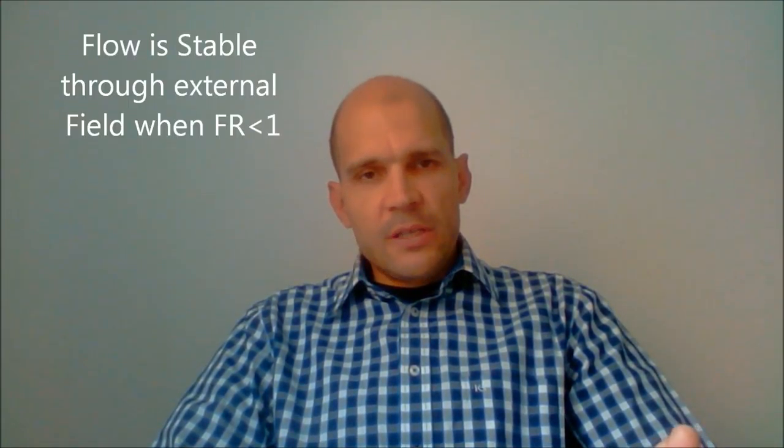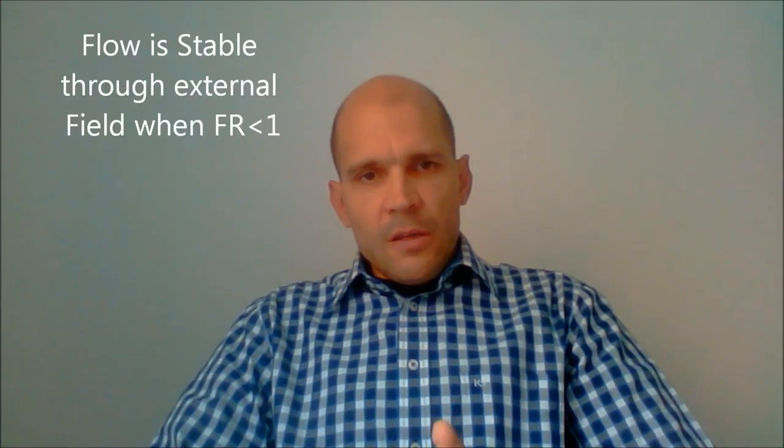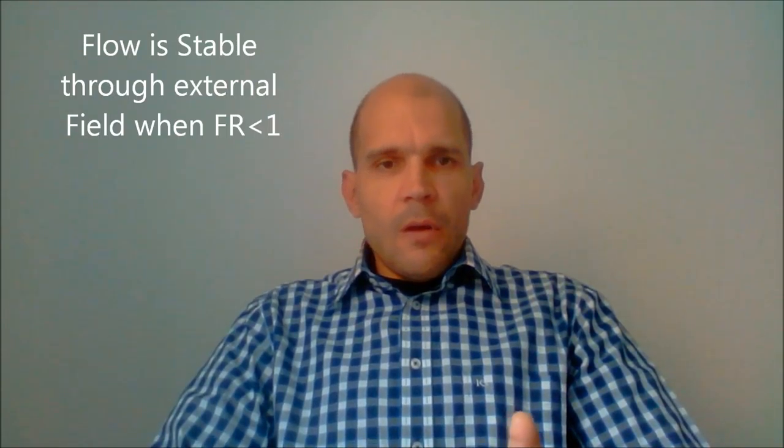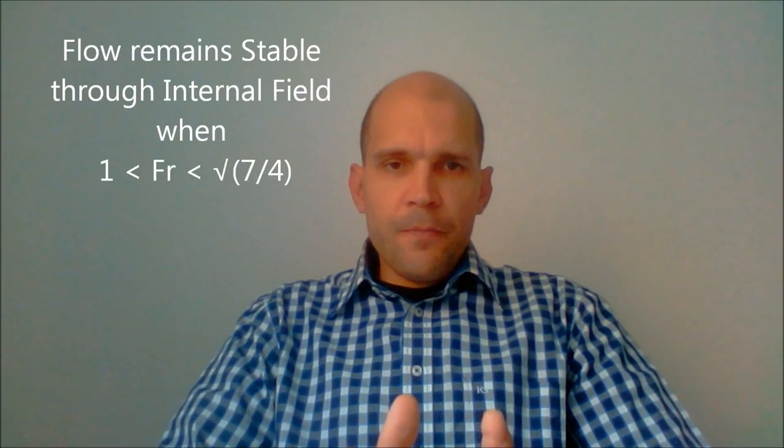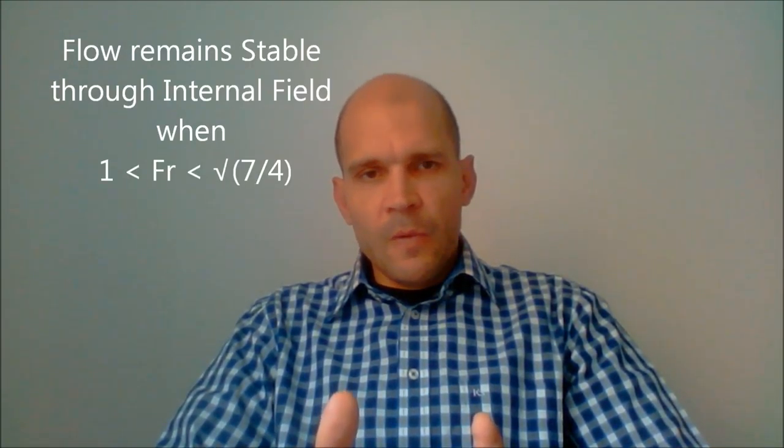So this derivation of these previously ignored roots reveals to us that the flow is actually stable up to Froude one and even above. And thereafter,